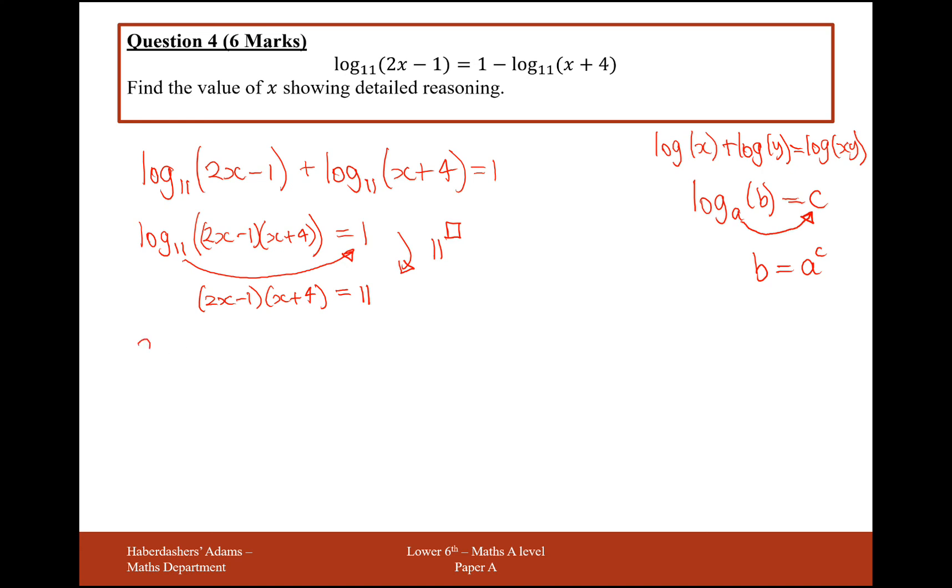Now we've got a quadratic, so all that's left is to expand it. We get 2x² plus 8x minus x minus 4 equals 11. Simplifying and taking 11 to the other side gives us 2x² plus 7x minus 15 equals 0.